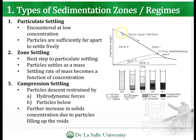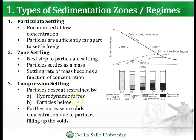Particulate settling is encountered at low concentration where particles are sufficiently far apart to settle freely — that's why it's called free settling. Next, in the zone settling period, particles settle as a mass and the settling rate becomes a function of concentration. Then you have compression settling, where the compacted sediments form and particles descend restrained by hydrodynamic forces.